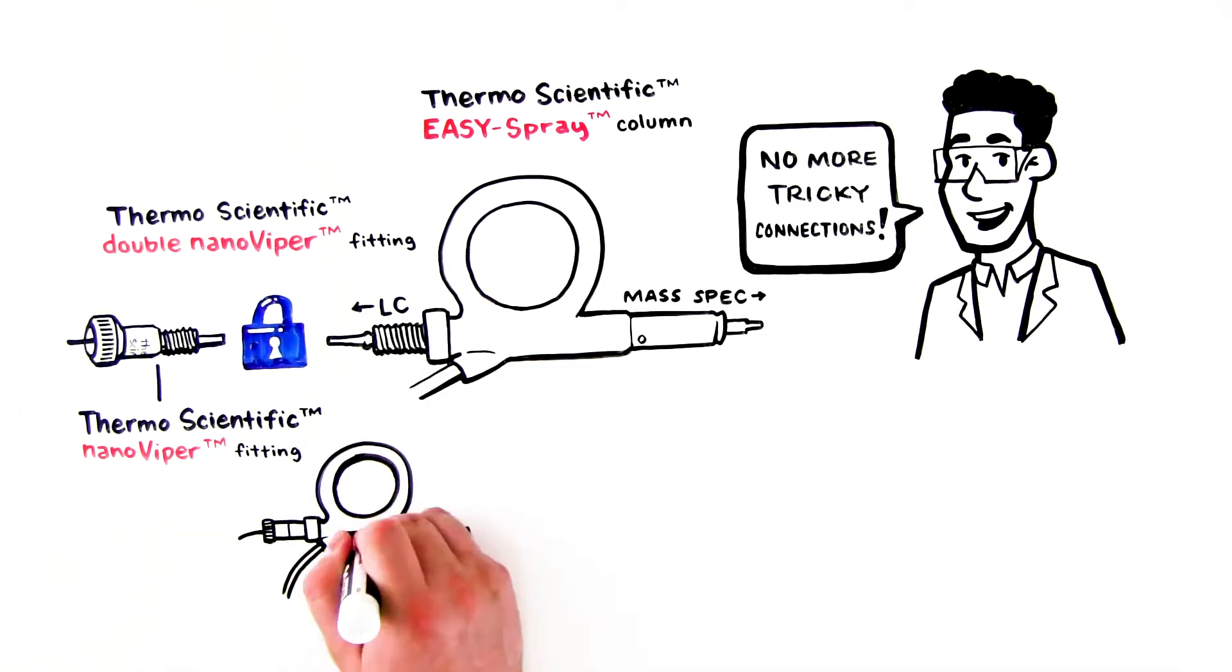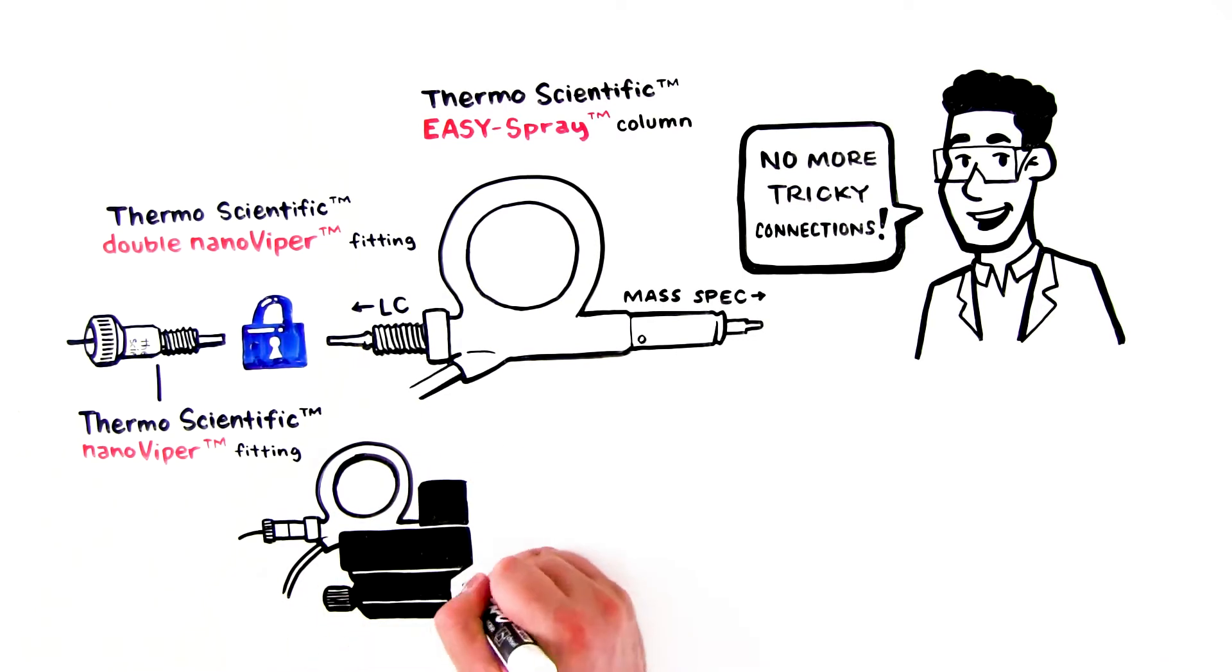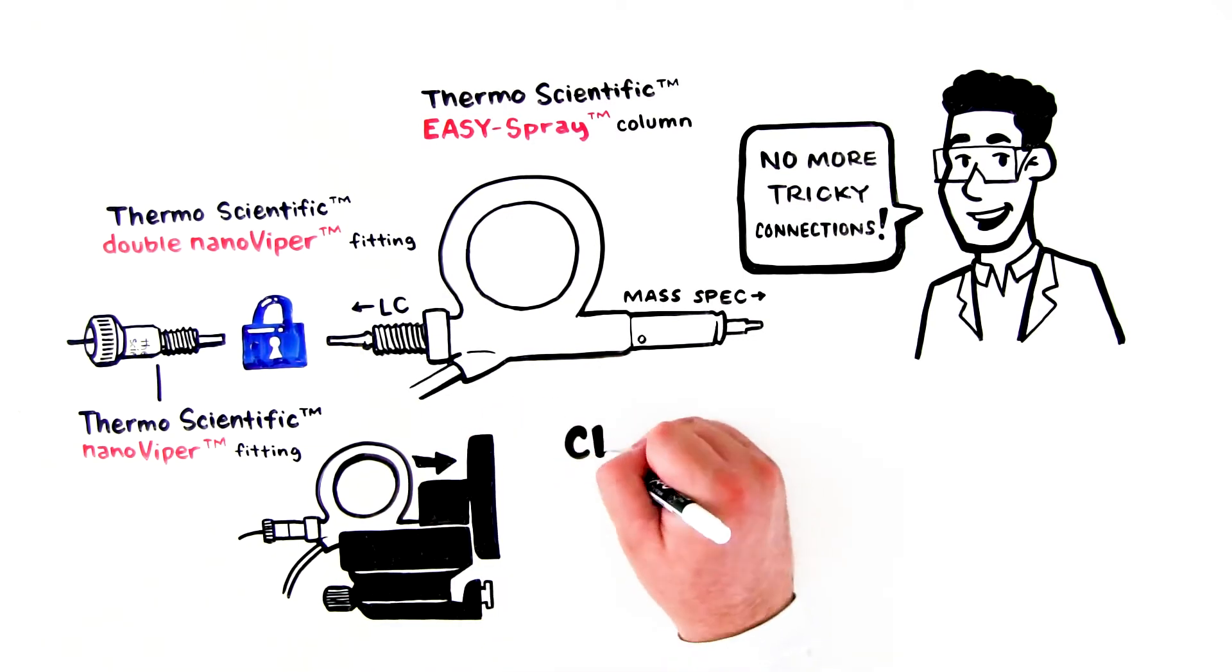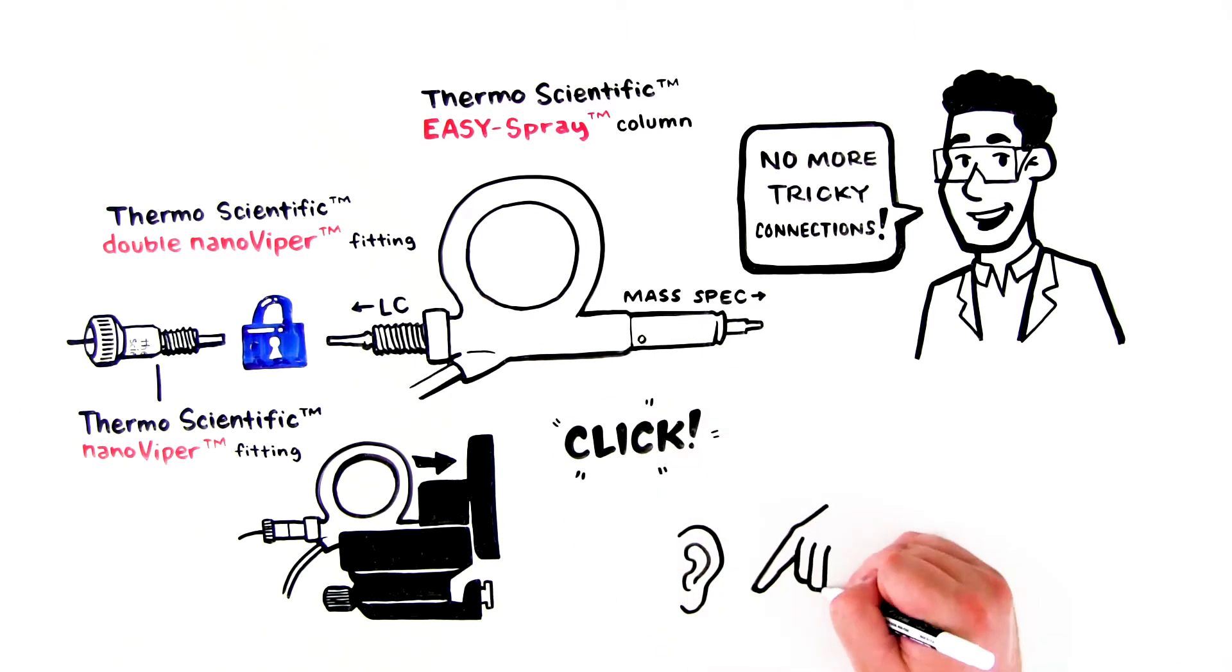The second connection is to the mass spectrometer's Easy Spray source. The innovative design allows the column to simply click into place. The click can be both heard and felt, so you know the connection has been made correctly.